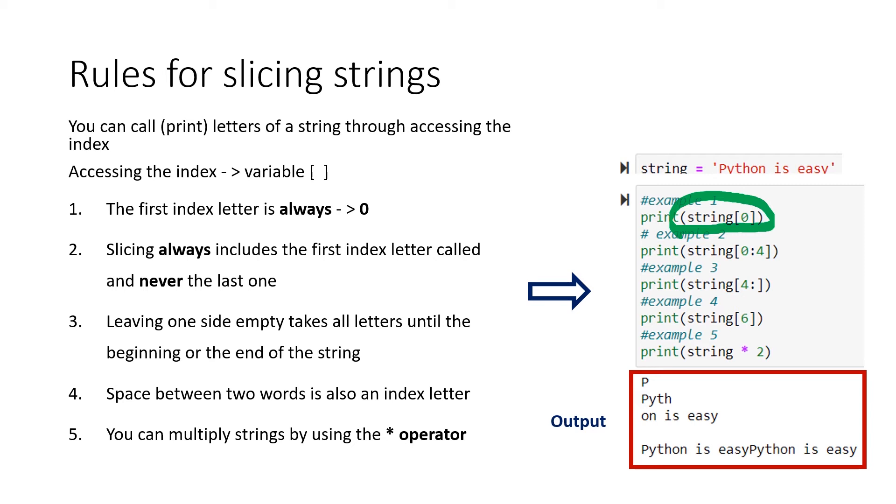Slicing always includes the first index letter called and never the last one. In our example, we have 0 until 4. That basically means the first letter is included, it is P with index number 0, and the last letter that is included is the fourth letter, but the third index, number 3.